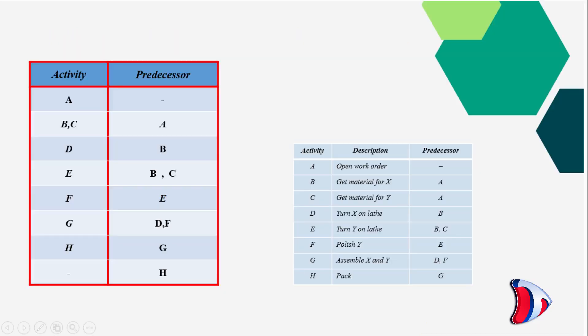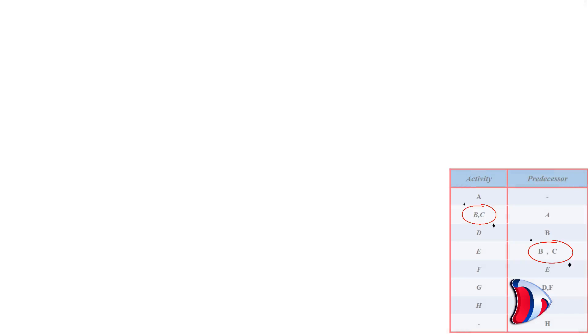Here we need to redraw the table showing the activities and their predecessor, so that we find out what all activities are starting from each predecessor. Here we must ensure that all the activities shown in activity column also feature in the predecessor column, and the last activity should be blank.